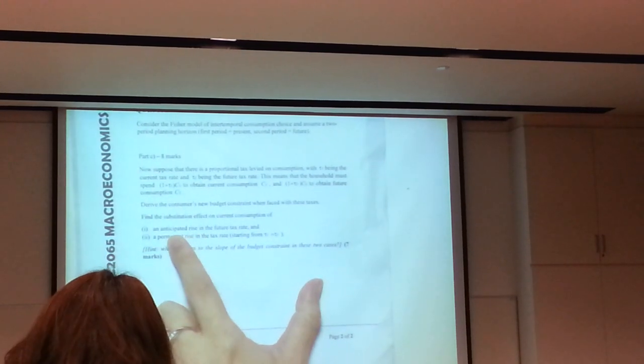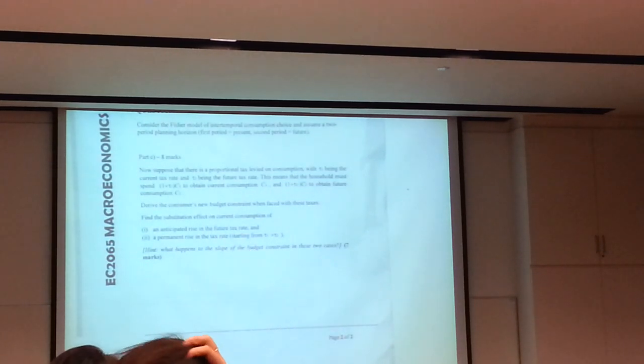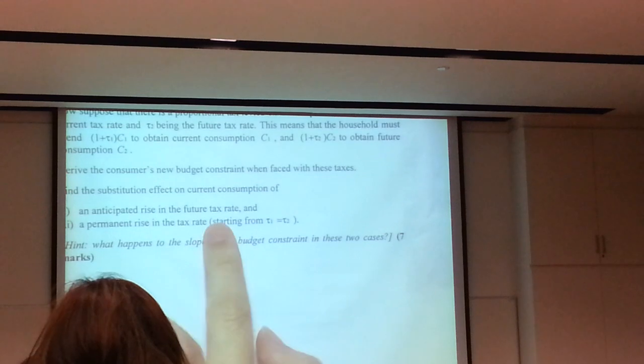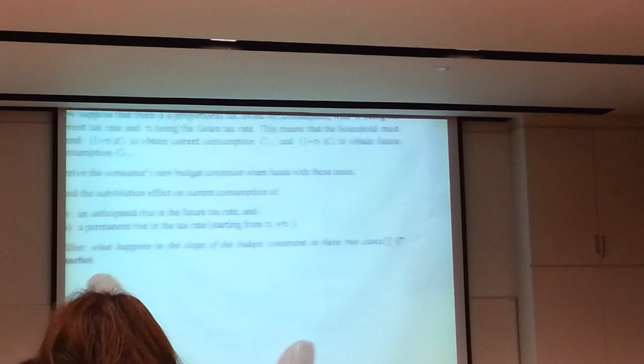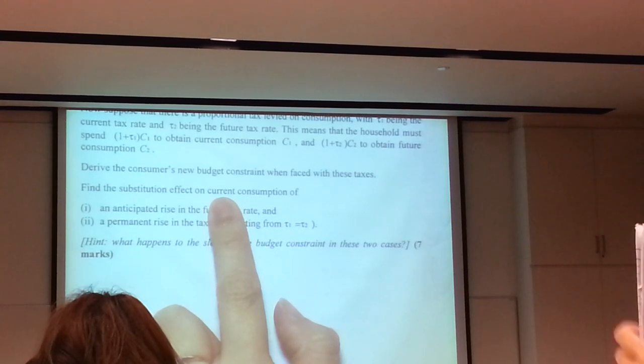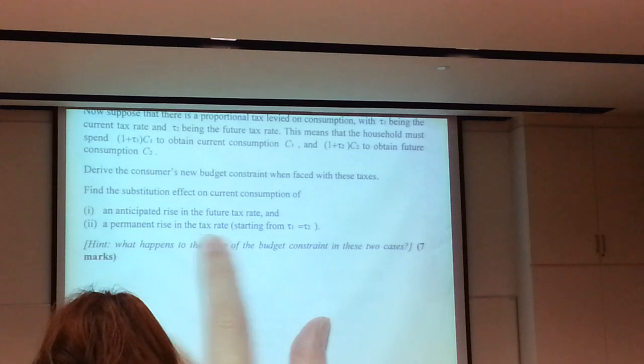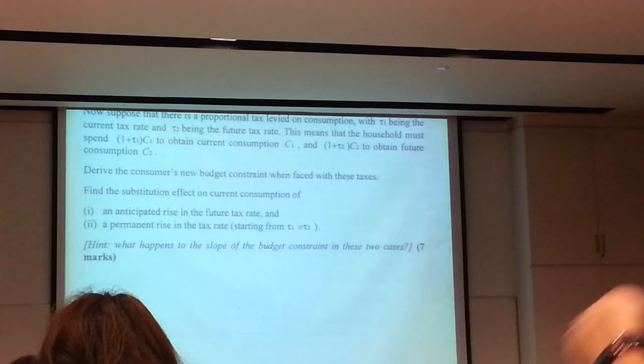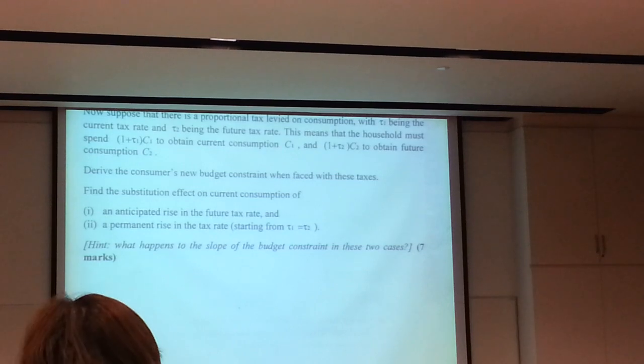So if now T1 is positive, this is IBC 0. Slope was 1 plus R. The new IBC should be steeper. Would we draw steeper anywhere we fancy? The answer is no. It must still pivot at point A. Because T2 is still 0. So it doesn't affect your future consumption. But your current consumption will shift inside. So this is your IBC 1. You can see this one, the slope, is 1 plus T1 times 1 plus R. So can you see concepts are consistent? The skills that you learn are always consistent.